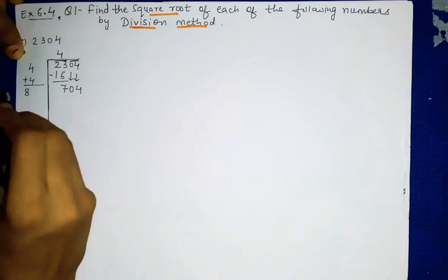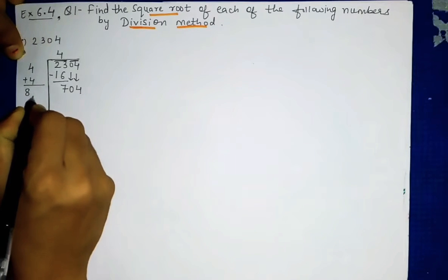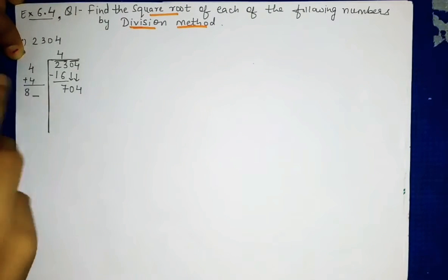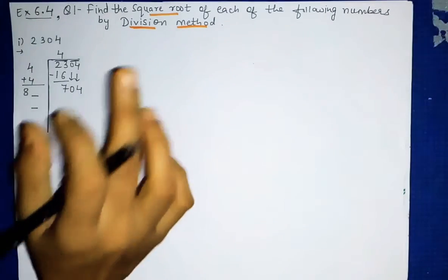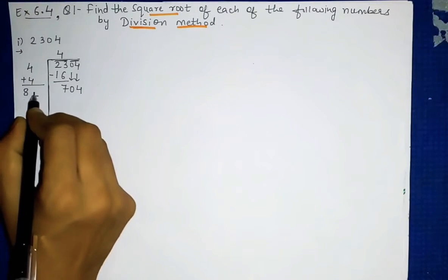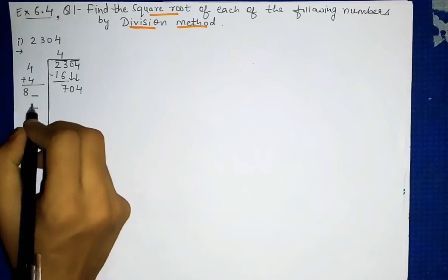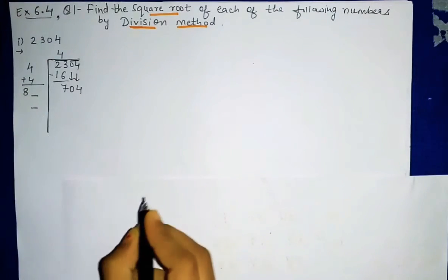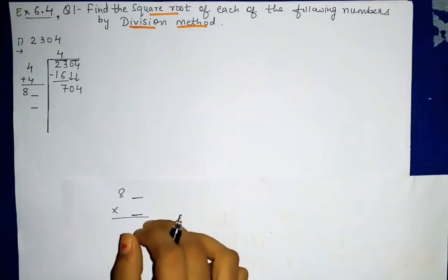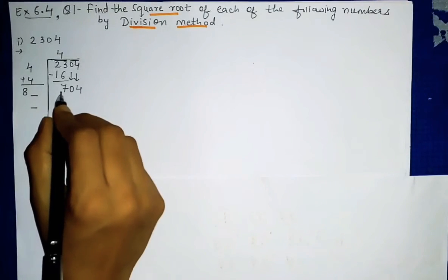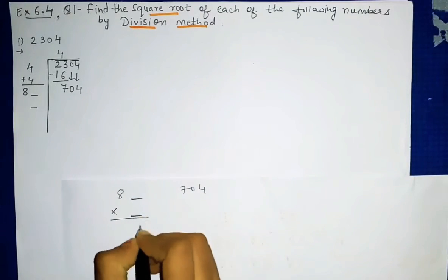Now we divide 704 with divisor 8. We need to think which digit to place with 8 — that same digit will be placed at the ones place of the divisor and also in the quotient, and we will multiply. The answer should equal 704. Whatever number we keep here, that same number we write here and multiply.